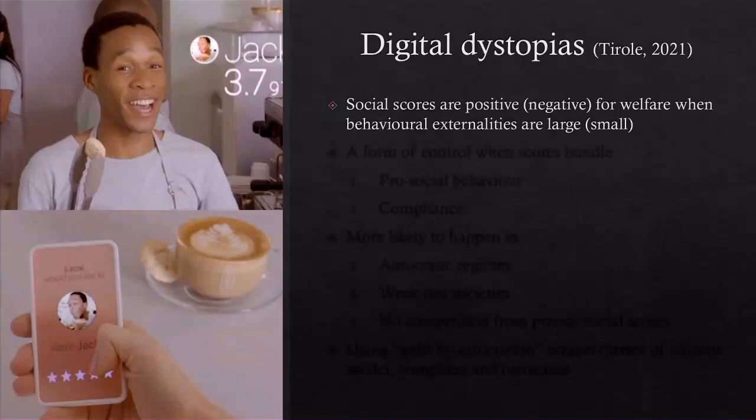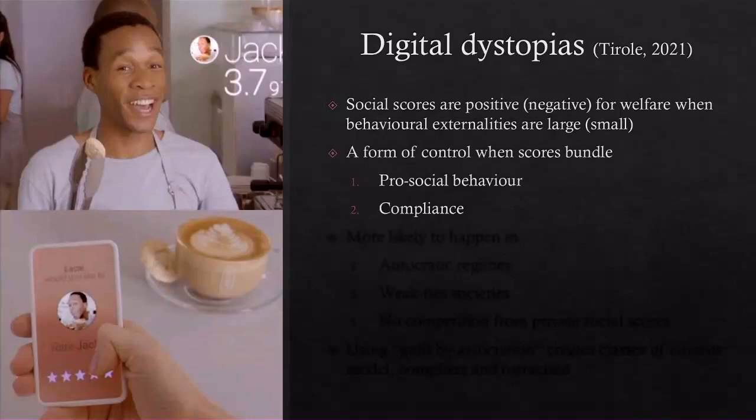A social score can be good if the externalities involved are large — regulating behavior through a score can have a positive effect, as Tirole shows. But if the externalities are small, that's less clear. The totalitarian or dystopian problem emerges when there is bundling: when a regime or firm bundles pro-social behavior with its own objectives.